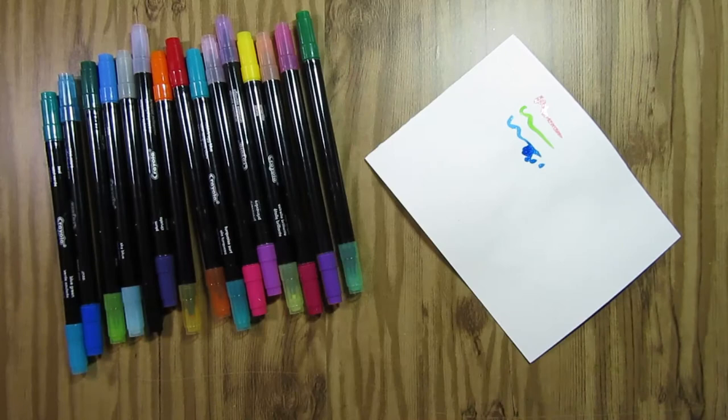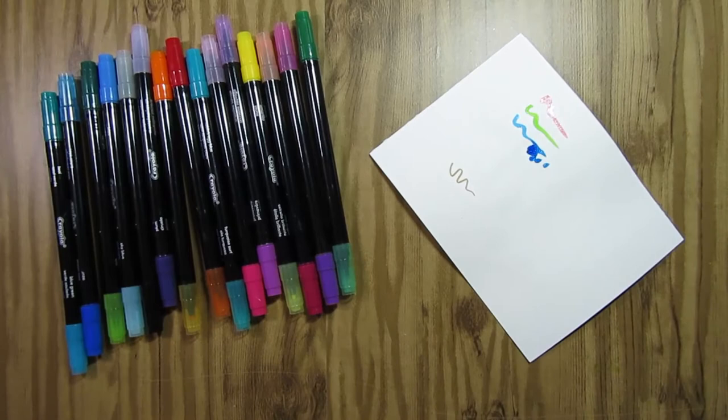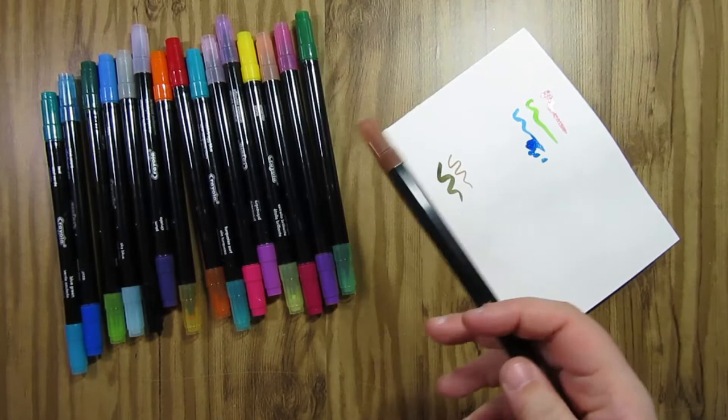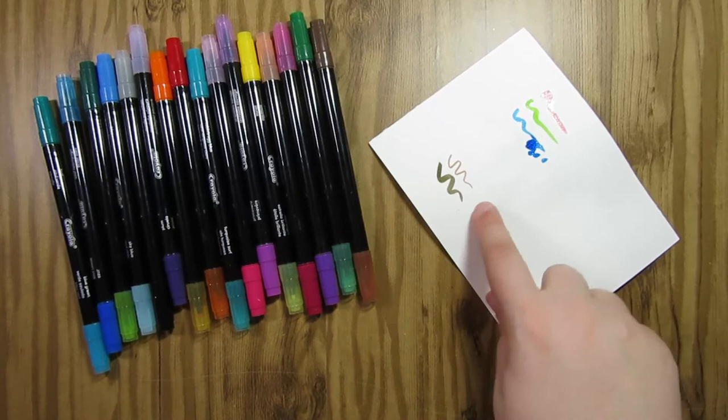One thing that kind of bothers me is the bullet nib and the brush nib for the same marker are different colors. So I think they did that to fit more colors in the set than they could. Like I think it's 48 colors total. But they're not the same color. And that's kind of annoying but whatever.